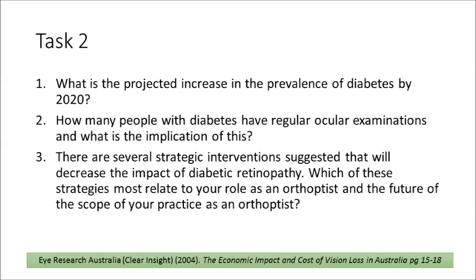Pages 15 to 18 of the Clear Insight report will guide you to answer the following three questions. One, what is the projected increase in the prevalence of diabetes by 2020? Two, how many people with diabetes have regular ocular examinations and what is the implication of this? And three, there are several strategic interventions suggested to decrease the impact of diabetic retinopathy — which of these most relate to your role and the future scope of practice as an orthoptist?